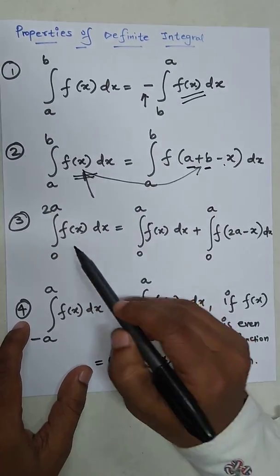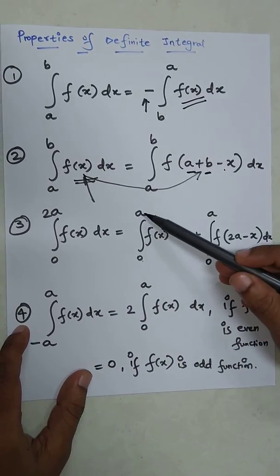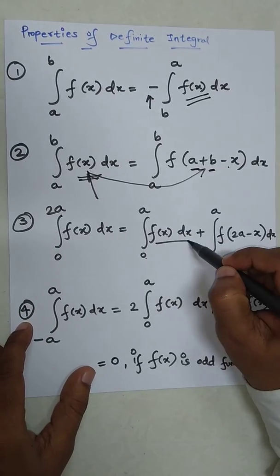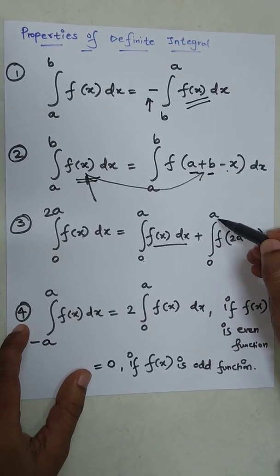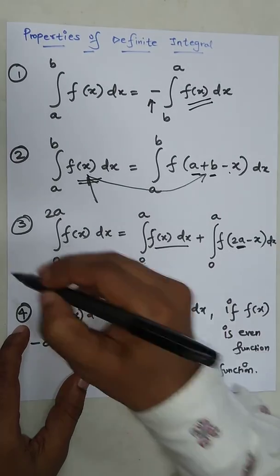Next thing is 0 to 2a, f of x dx. So this we can write as 0 to only a, f of x dx that is the first thing, plus 0 to again a, f of 2a minus x dx. That is the third property.